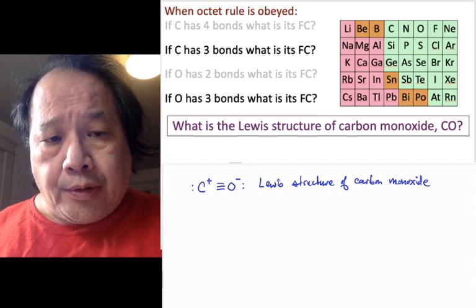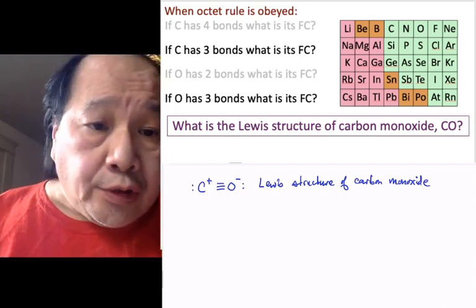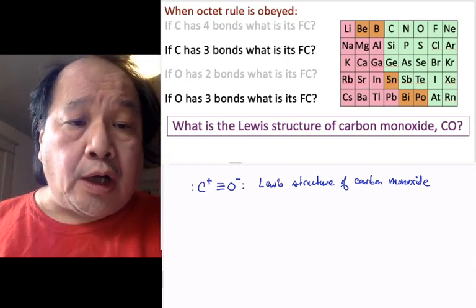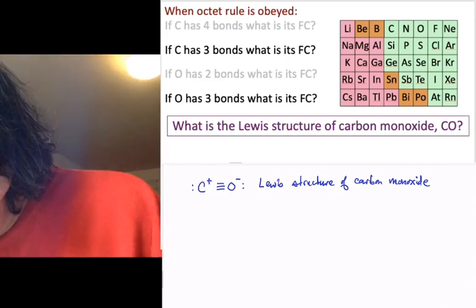But you may be wondering, how do I know that this is the correct Lewis structure? Can't I, after all, draw other connections between the carbon and oxygen that would also be Lewis structures? What about this one, for example?